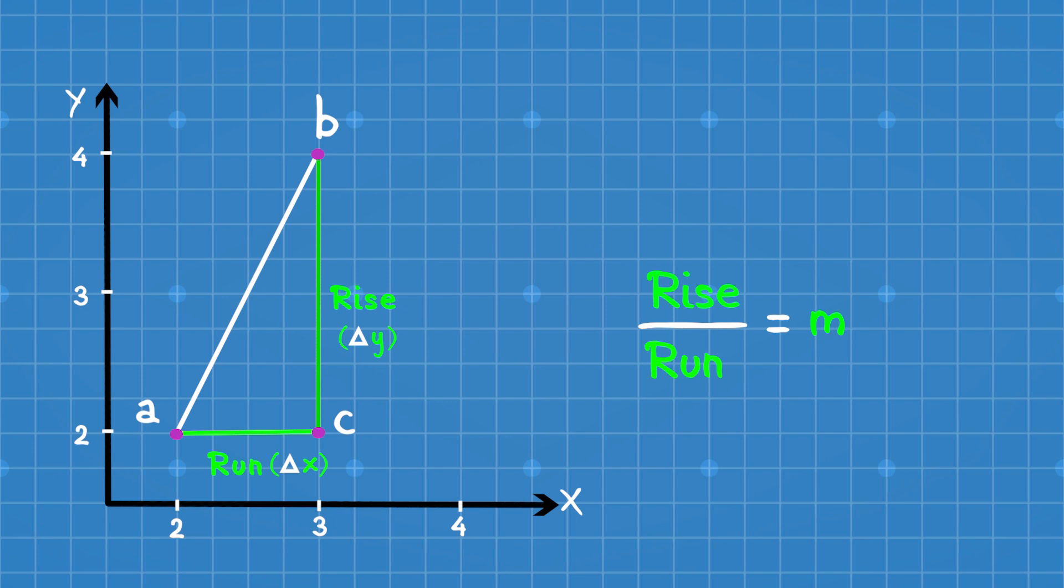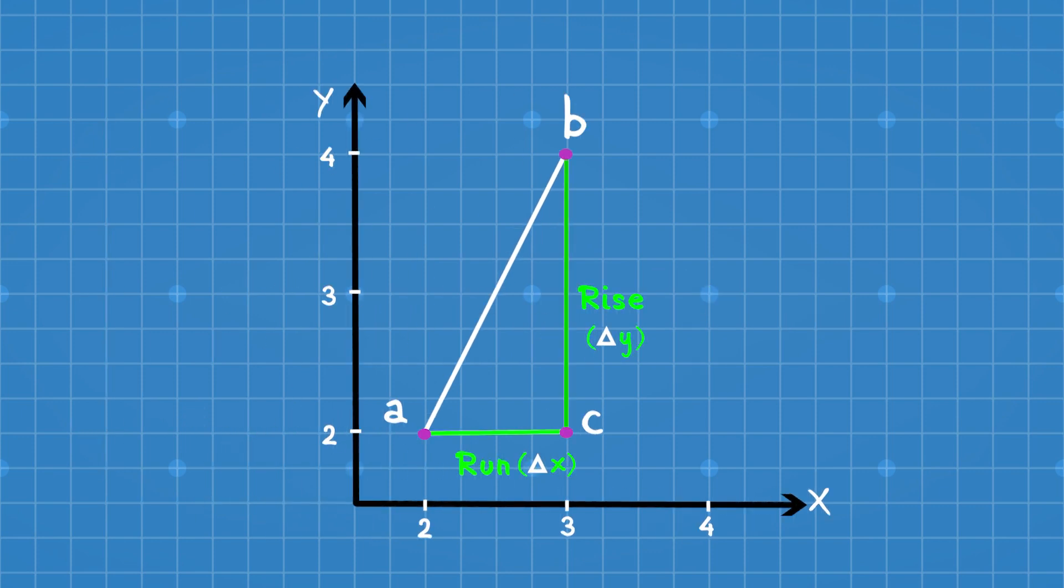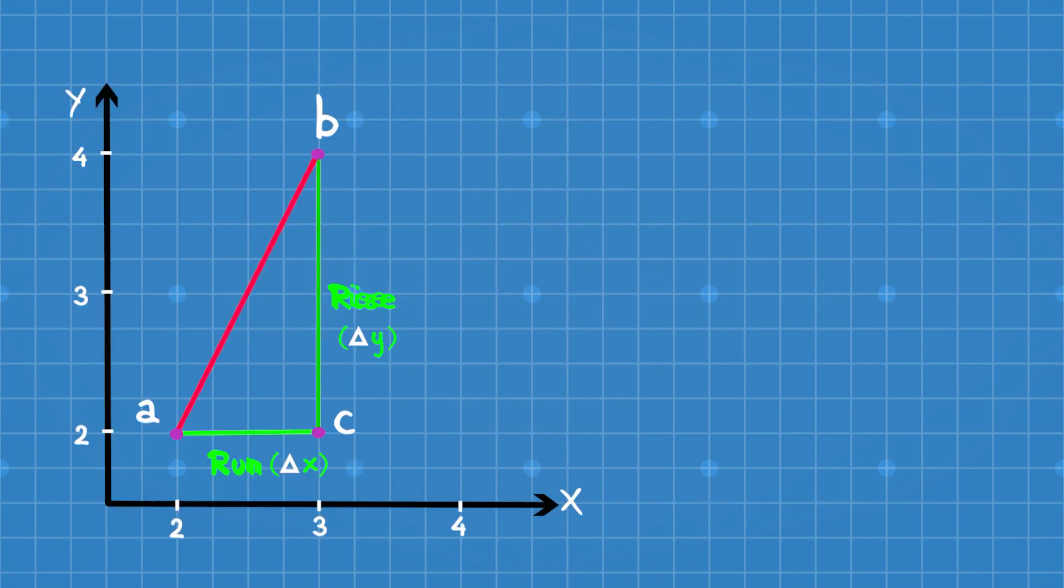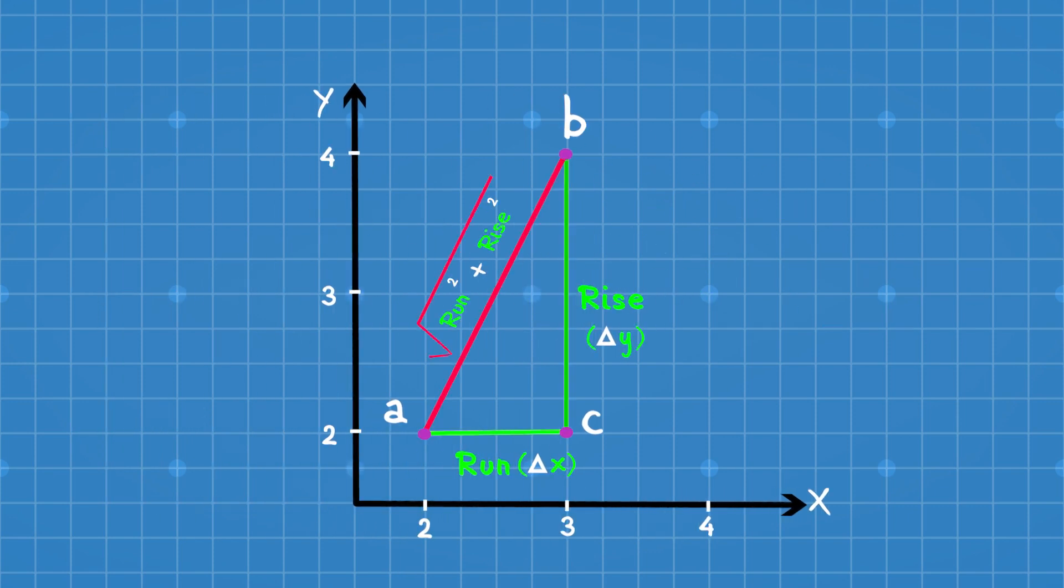Apart from finding the slope, we are also interested to get the length of line segment AB. Finding the length will be a cakewalk if you know how to calculate slope. Yes, Sir Pythagoras made it super easy for you. Just now you made a triangle from a line which is a right triangle. Square run and rise, add them and find the square root. This gives you the length of line AB according to Pythagoras theorem.